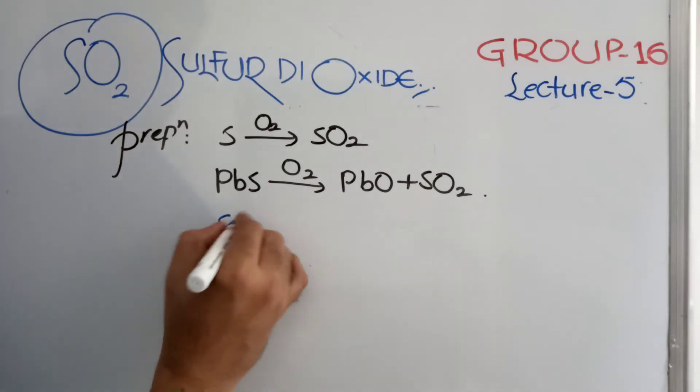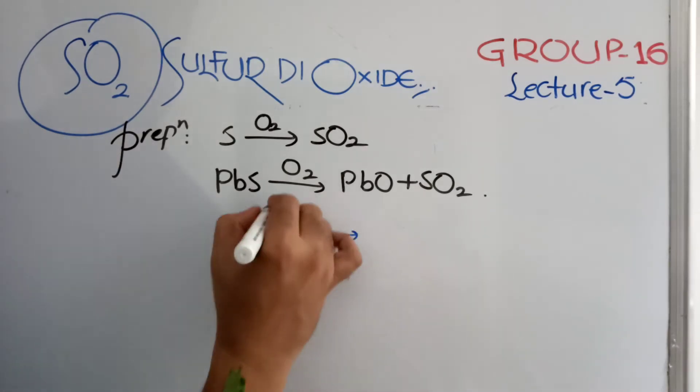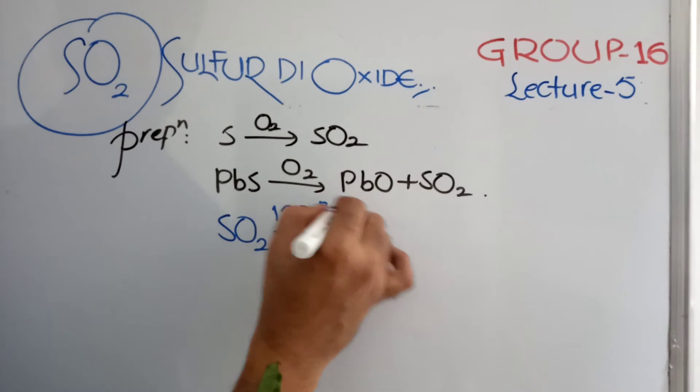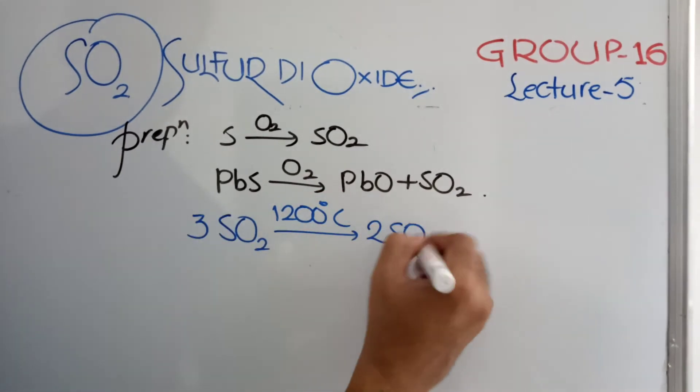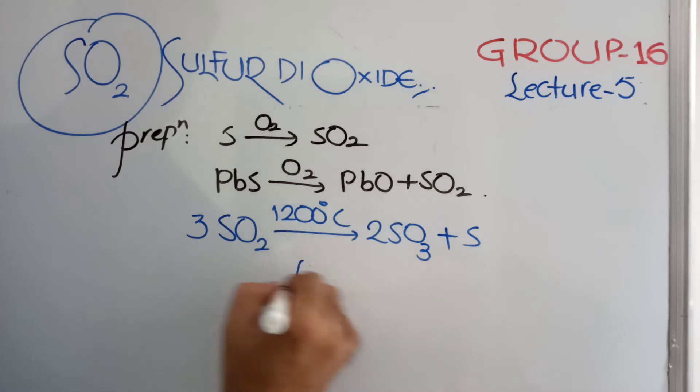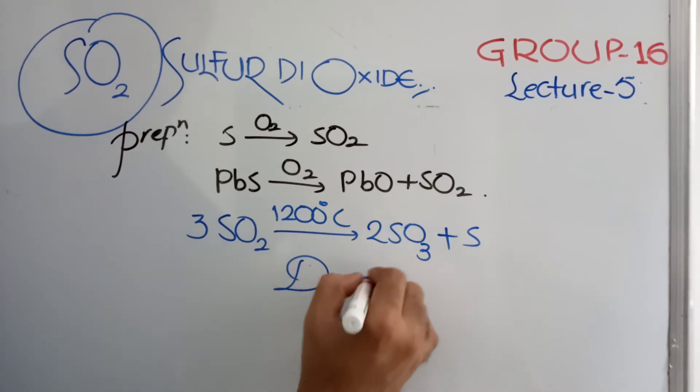And the properties are very interesting. When Sulfur Dioxide is heated to 1200 degrees Celsius, it turns into Sulfur Trioxide and Sulfur. This you can say, disproportionation type of reaction.